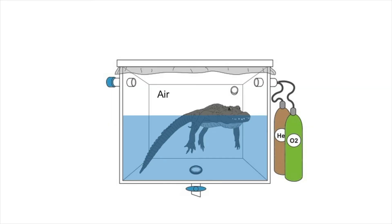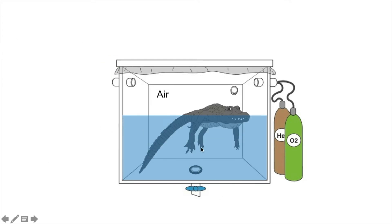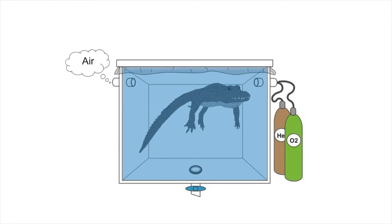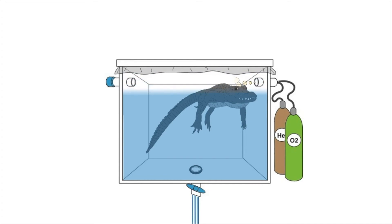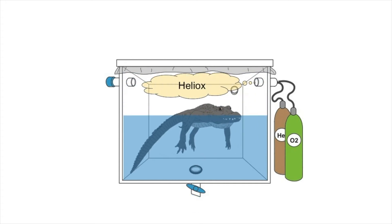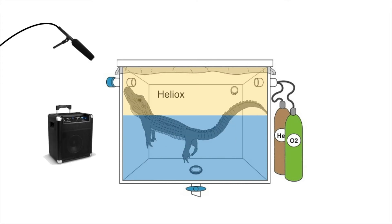This is a simulation of our experiment. The alligator is already in an airtight space and the atmosphere above the water is ambient air. In this setup, we induced her to bellow and recorded her calls. Then we opened the vent on the side, raised the water level and pressed the ambient air out of the tank. We closed the vent and lowered the water level, filling the resulting vacuum with heliox. Now the atmosphere above the water was heliox. Then we induced our animal again to bellow and recorded her calls, and like this we had recordings in both ambient air and heliox.